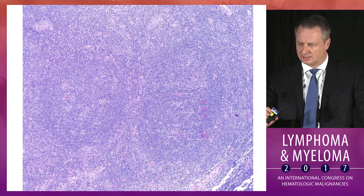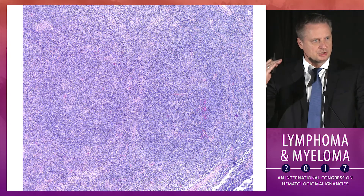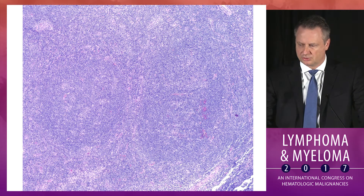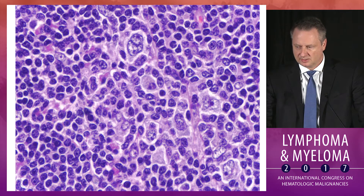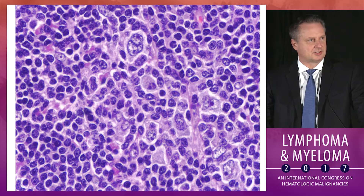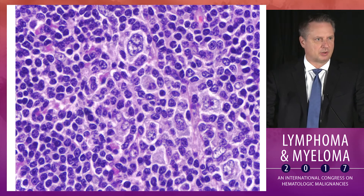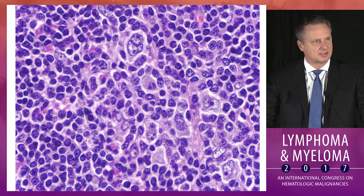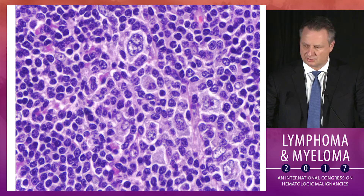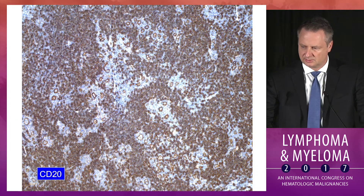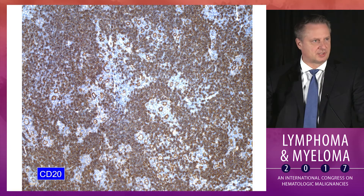If you look at the biopsy almost like a diagram, you see two large nodules with a very homogeneous blue infiltrate throughout — a smaller nodule on the left and a little bit larger on the right with a diffuse infiltrate within. At higher power you see what looks to be small lymphocytes and what are called LP or popcorn-like cells, with scant cytoplasm, polylobated nuclei, and increased nucleoli.